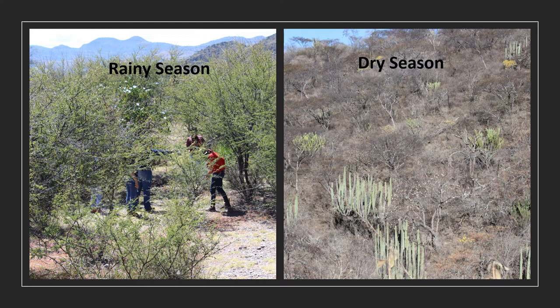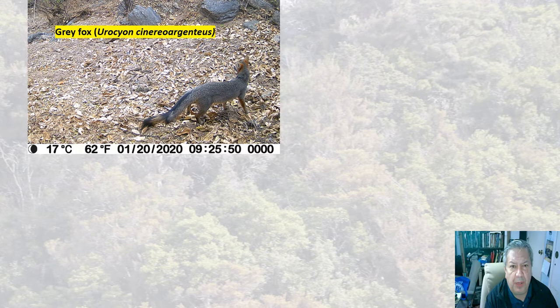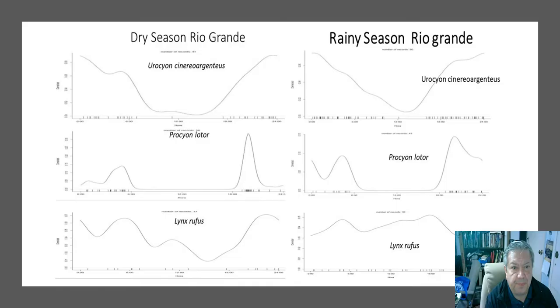So, we used two different areas to determine if the effect of dry and rainy season may change the activity patterns of the mesopredators. We studied three of the main mesopredators in the area: the gray fox Urocyon cinereoargenteus, the raccoon Procyon lotor, and the bobcat Lynx rufus.